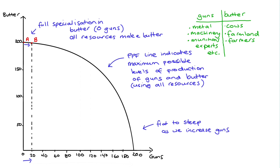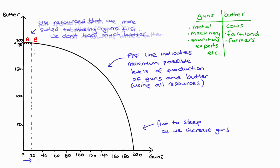When we make those first guns, we're going to use those resources in our economy that are best at making guns first — so the best metal, the best munitions experts, etc. As we said before, these resources are not so great at making butter. And this means when we take those resources away from making butter, we don't lose too much butter. To put some numbers on it, maybe we go from 200 to 198 butter — so we lose just two butter. By using those resources most suited to making guns first, we don't lose too much butter.